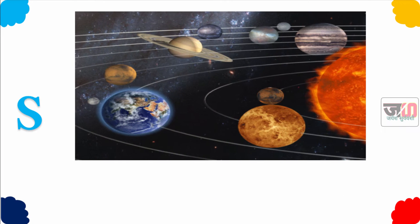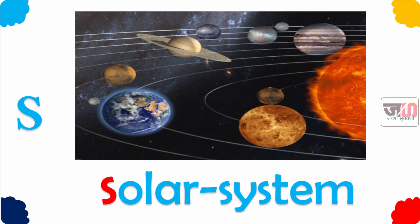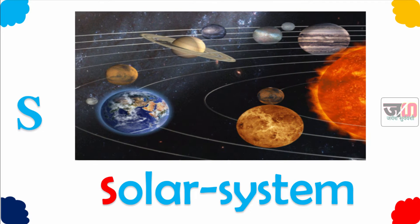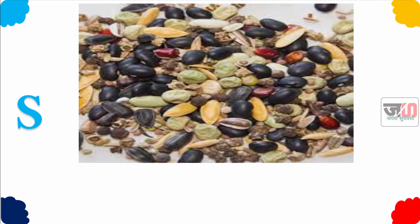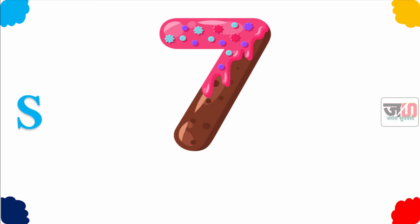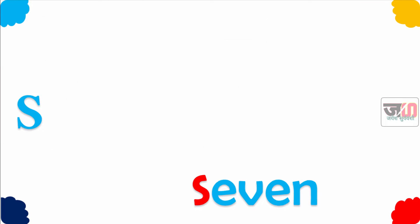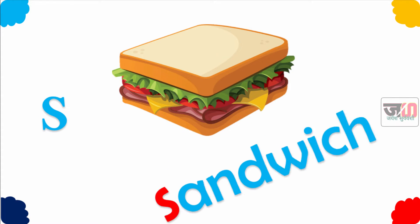S for Solar System. Solar System means Surya Mala, jamaadhe ane grah ane opa graha astat, apli prithwi hi tya chai ek bhaag ahe. S for Seeds. Seeds means bia. S for Seven. Seven means saat. S for Sandwich, eek khatye padartho.